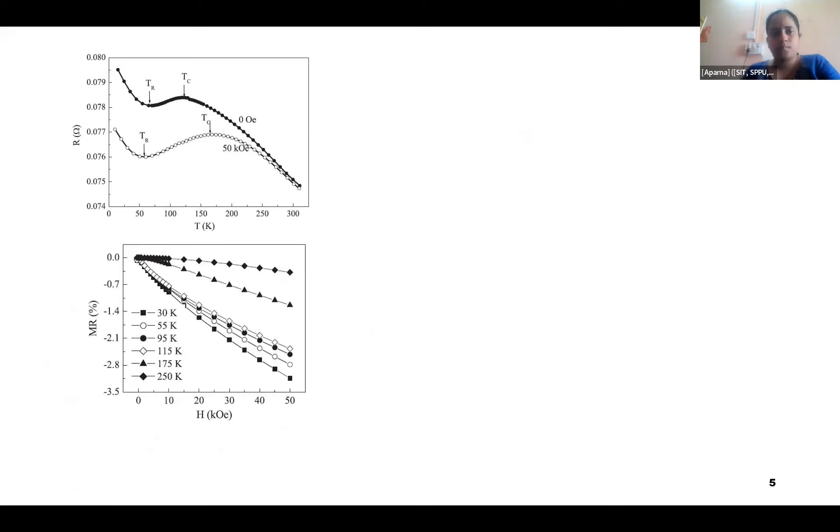Above the Curie temperature, they have obtained a very sharp change indicating a metallic to semiconducting nature, telling that they have obtained the half-metallic ferromagnetic nature.